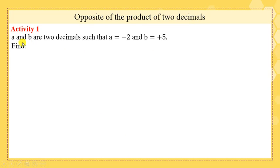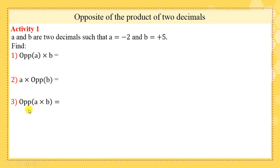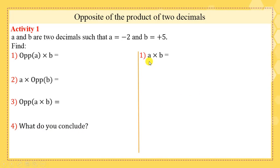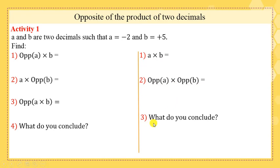We will also use the distributivity of multiplication over addition and subtraction, and perform calculations on algebraic numbers. Materials needed: textbook edition 2017, copybook, and a pen. Activity one: a and b are two decimals such that a equals negative 2 and b equals positive 5. Find: part 1, opposite of (a × b); part 2, a × opposite of b; part 3, opposite of a × b; part 4, what do you conclude? Then find a × b and opposite of a × b. Please pause this video and try to solve this activity.